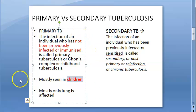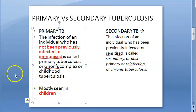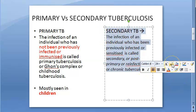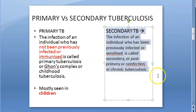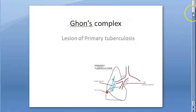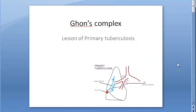In primary tuberculosis, the lung is usually affected, but if the bacteria was ingested, even the small intestine can get affected. Secondary tuberculosis is where the person is getting the infection for the second time — basically a reinfection. So we are talking about Ghon's complex, which is a lesion seen in primary tuberculosis only.